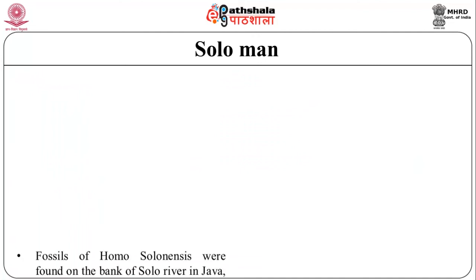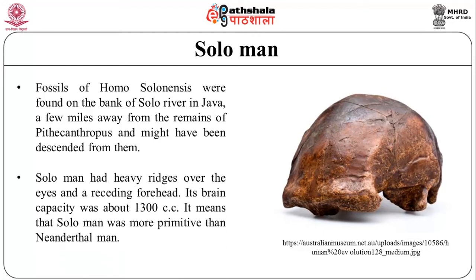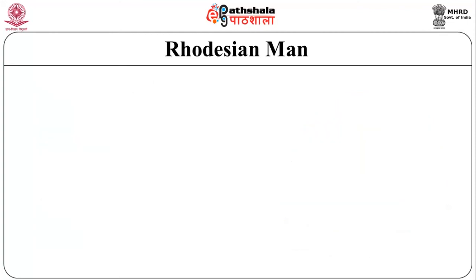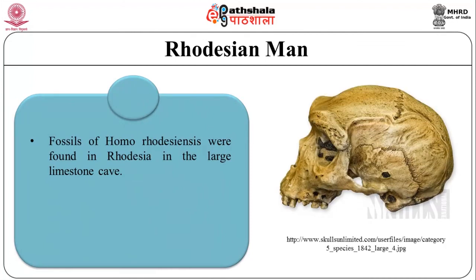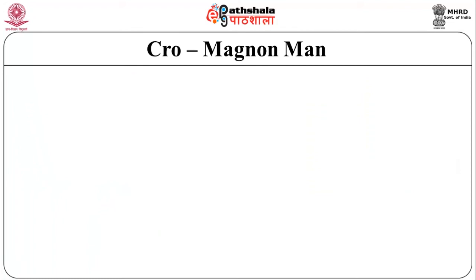Solo Man: fossils of Homo soloensis were found on the bank of the Solo River in Java, a few miles from remains of Pithecanthropus, and might have been descendants of them. Solo Man had heavy ridges over the eyes and a receding forehead; brain capacity was about 1300 cc, making Solo Man more primitive than Neanderthal Man. Rhodesian Man: fossils of Homo rhodesiensis were found in a large limestone cave in Rhodesia. The skull had a cranial capacity of about 1300 cc with a receding forehead and heavy eyebrow ridges, and might be even more primitive than Java Man.